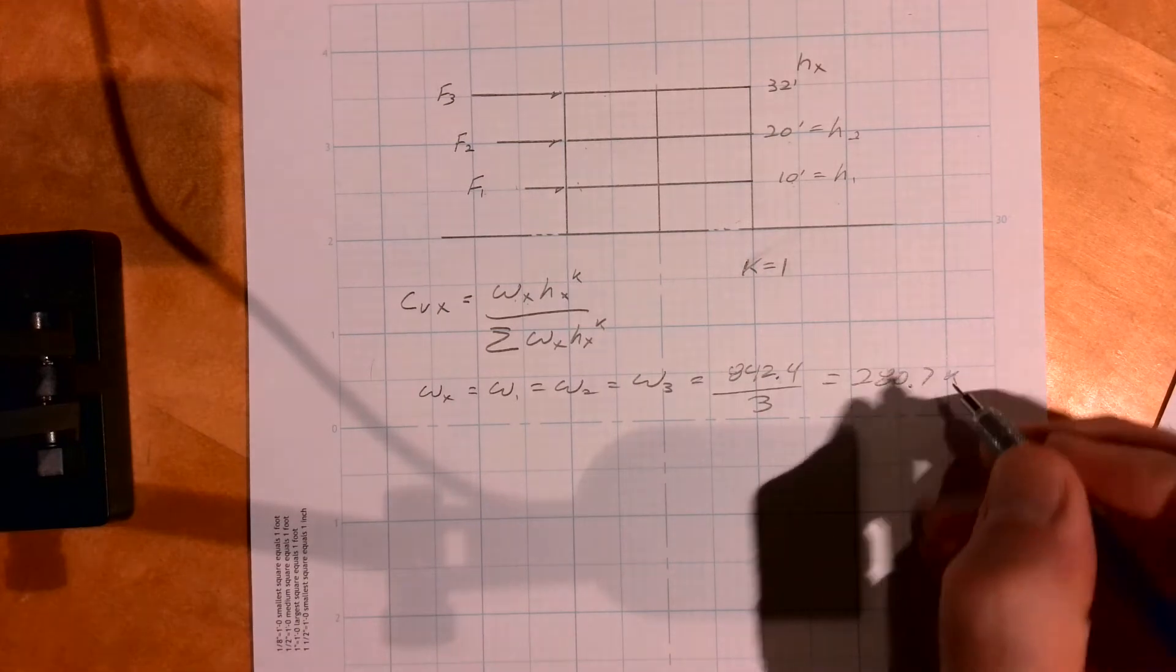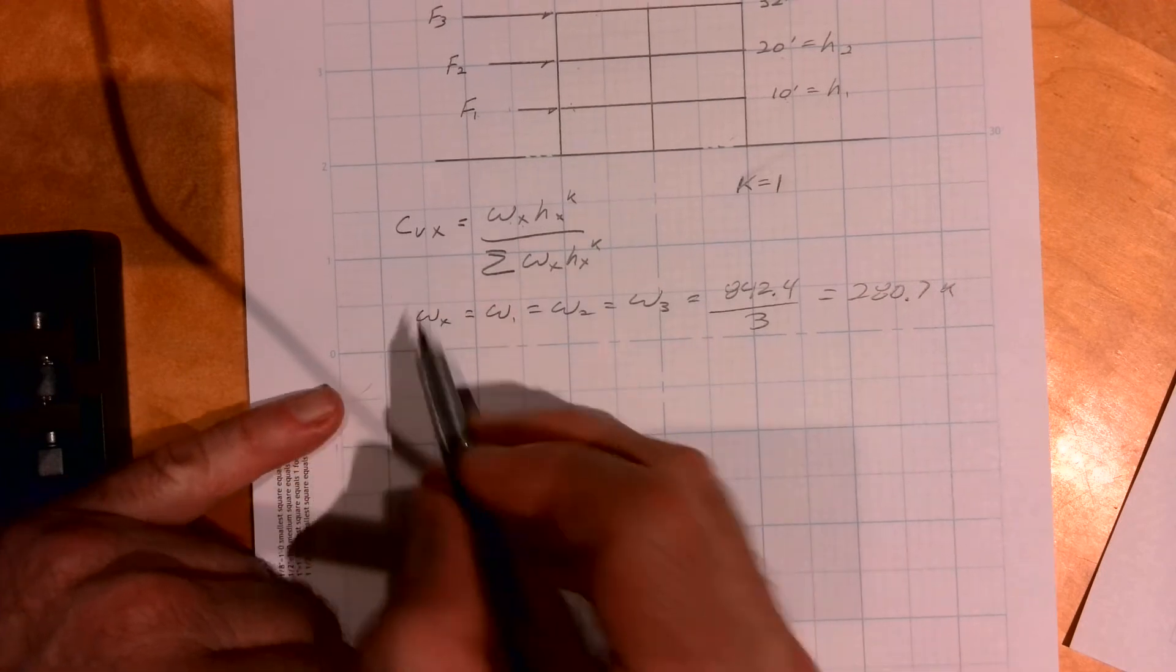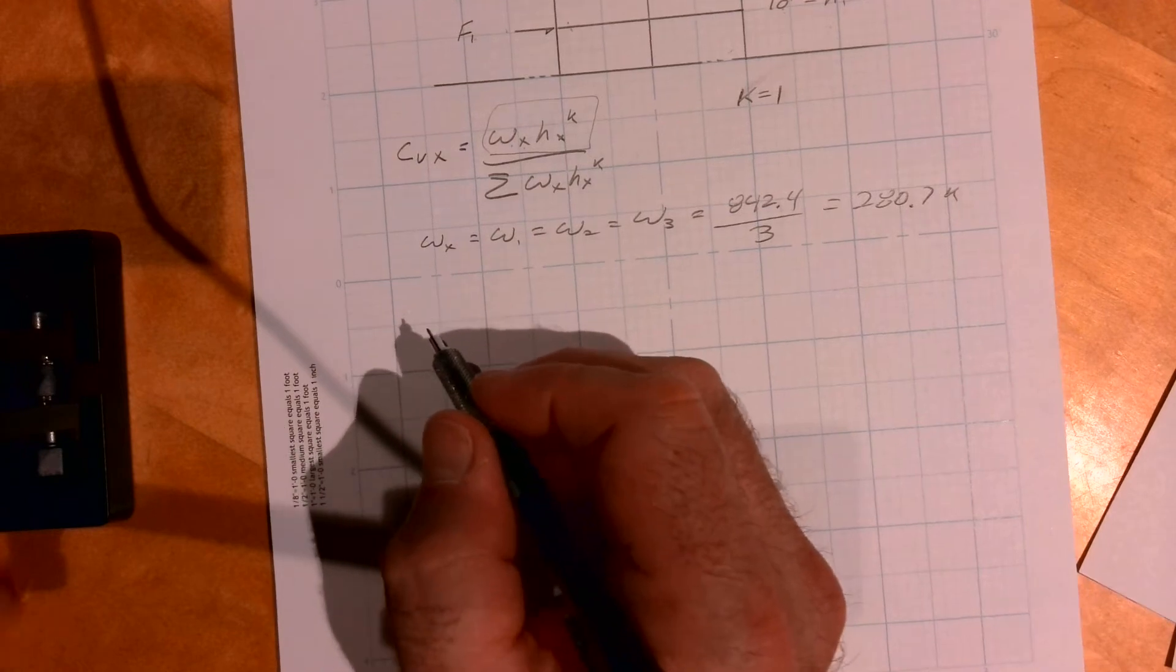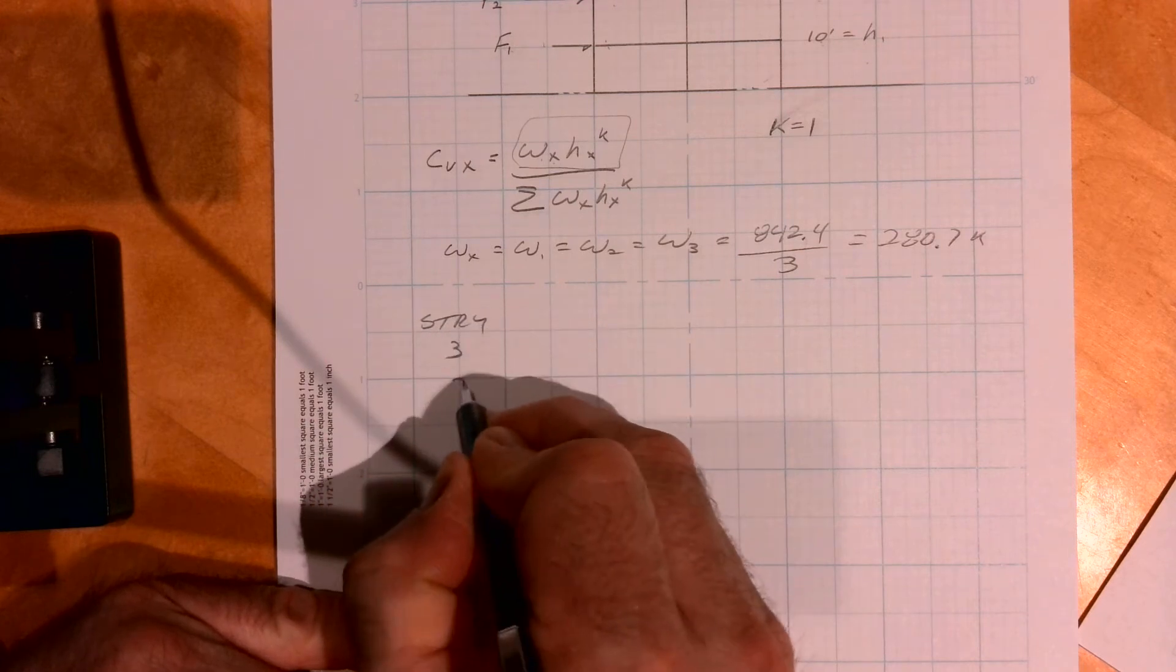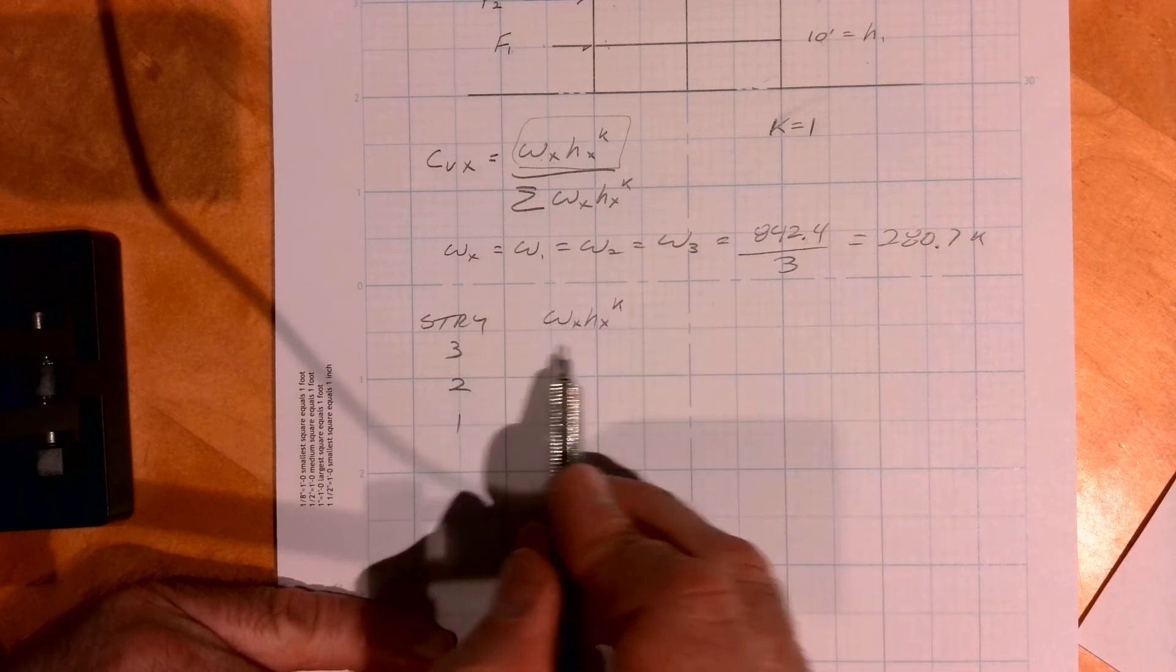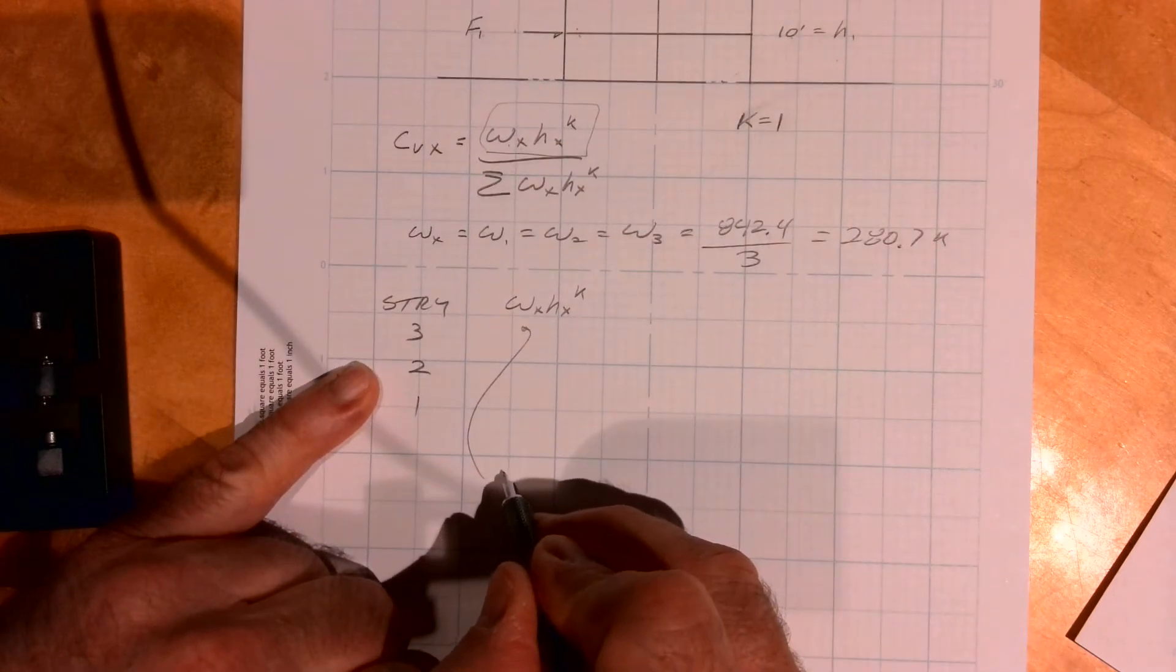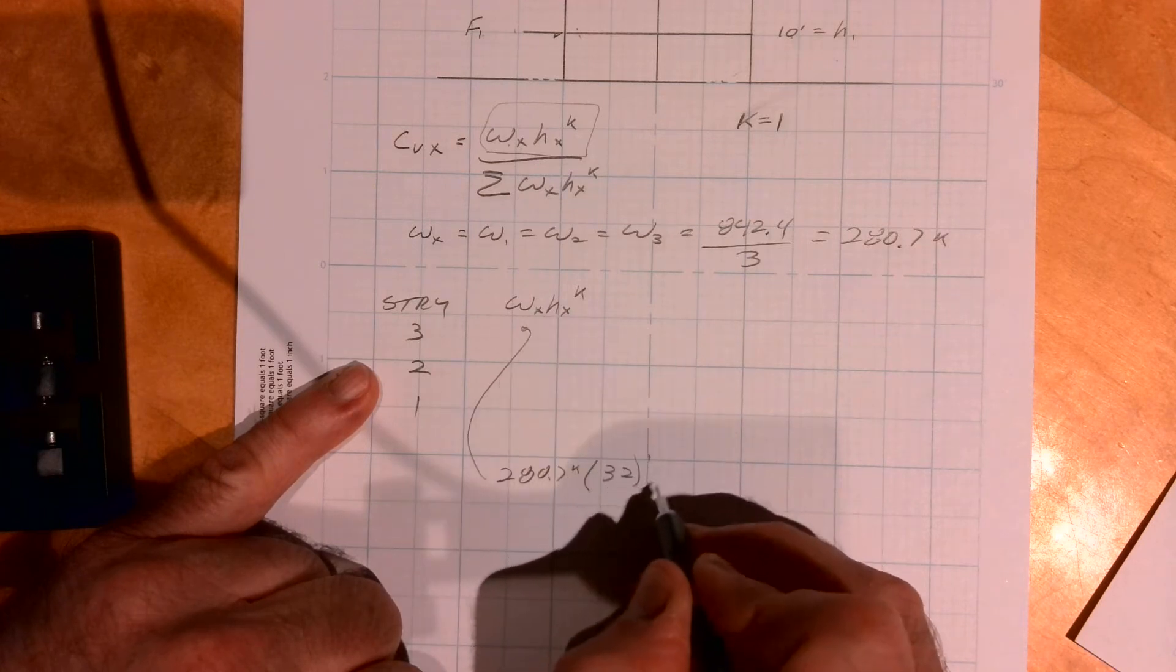So I have 842.4 over 3, and change, kips per floor. Okay, so now this is where an excel sheet is nice. So let me just write out a thumbnail of an excel sheet. So I could say story 3, 2, 1, and then w x h x to the k. So in this case for the top story we'd be 32 feet is the height. So let's see, we have 280.7 kips is w x times 32 feet to the first power.